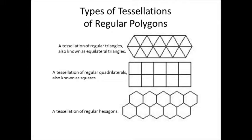There are only three types of tessellations of regular polygons. These are tessellations of triangles, quadrilaterals, and hexagons.